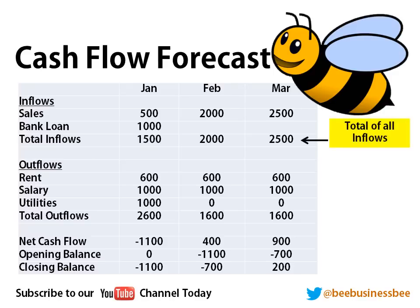Your total inflows are calculated by adding all your inflows together — so your sales and your bank loan, for example. My total outflows are calculated the same way — I've added up my outflows: my rent, my salary, and my utilities — and I've got a total for each month.